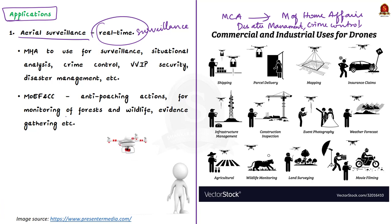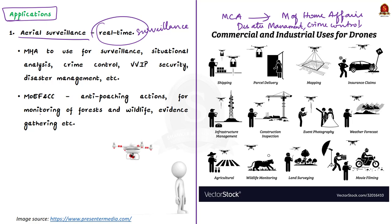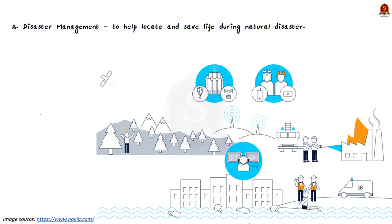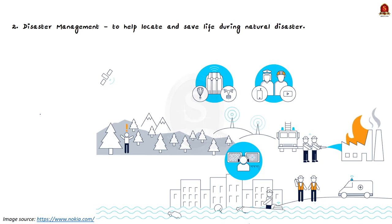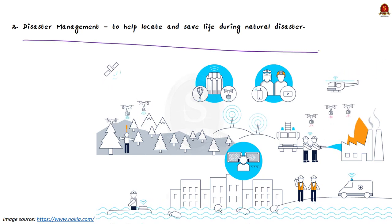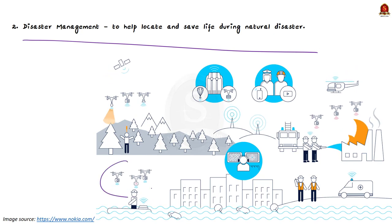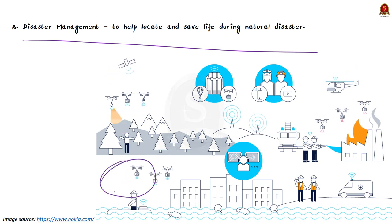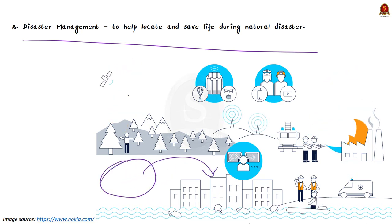Drones can also be used for anti-poaching actions, monitoring forests and wildlife, and evidence gathering by the Ministry of Environment. Second, they can be used in disaster relief — if sensors are added, drones can help locate and save lives during a natural disaster.